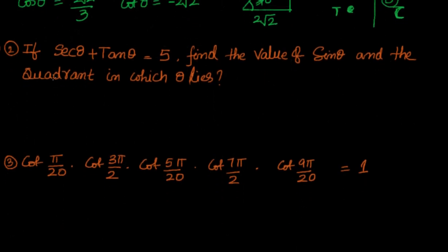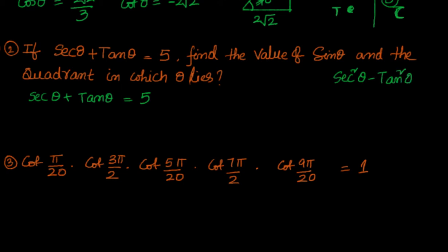The next problem: given sec theta plus tan theta equals 5, find the values. We know the identity sec squared theta minus tan squared theta equals 1. This factors as a difference of squares: (sec theta + tan theta)(sec theta − tan theta) = 1. So sec theta plus tan theta equals 1 divided by (sec theta minus tan theta).